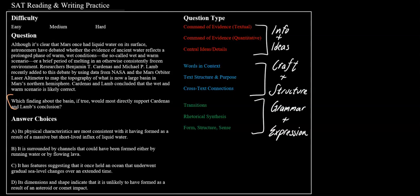And it asks, which finding about the basin, if true, would most directly support a conclusion? And it'll usually have the word concluded in the passage, usually towards the end. So we found that right there, Cardenas and Lamb concluded that the wet and warm scenario is likely correct. Now what is the wet and warm scenario?